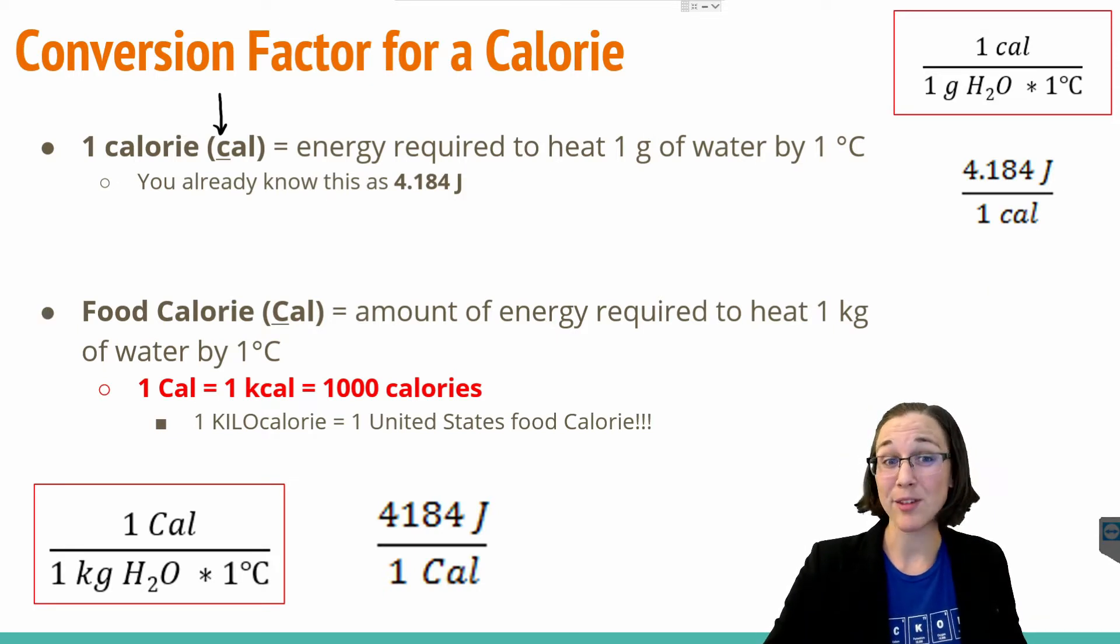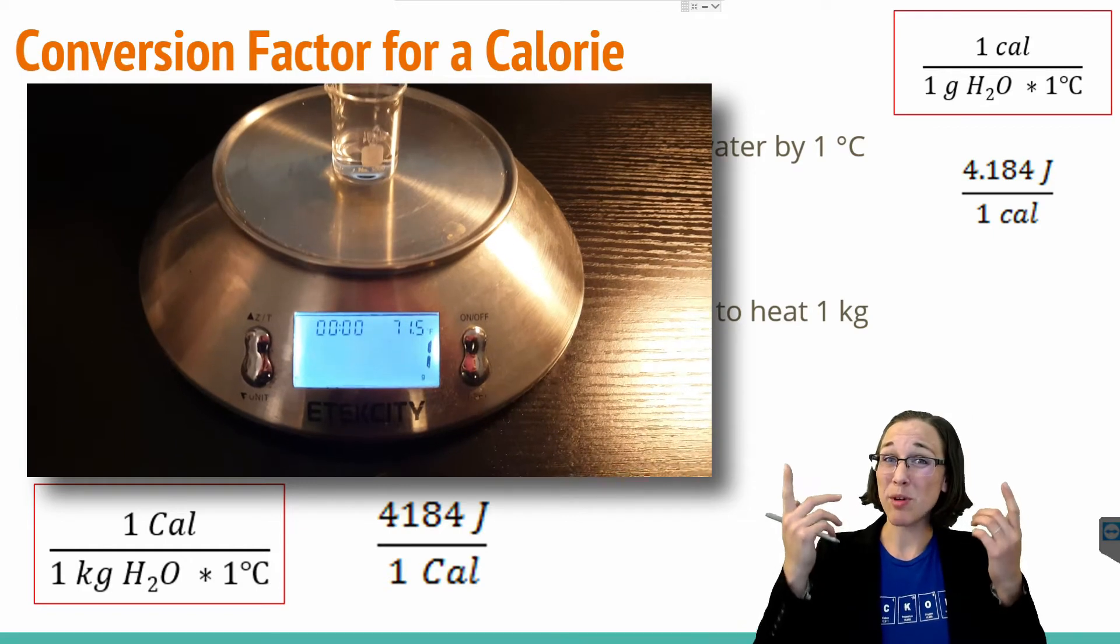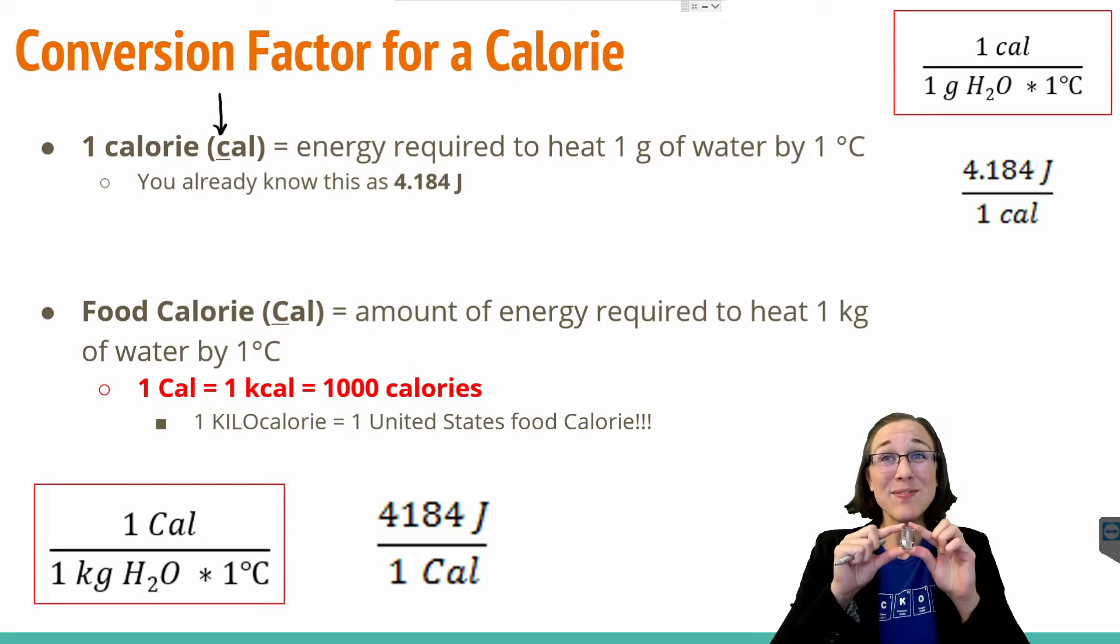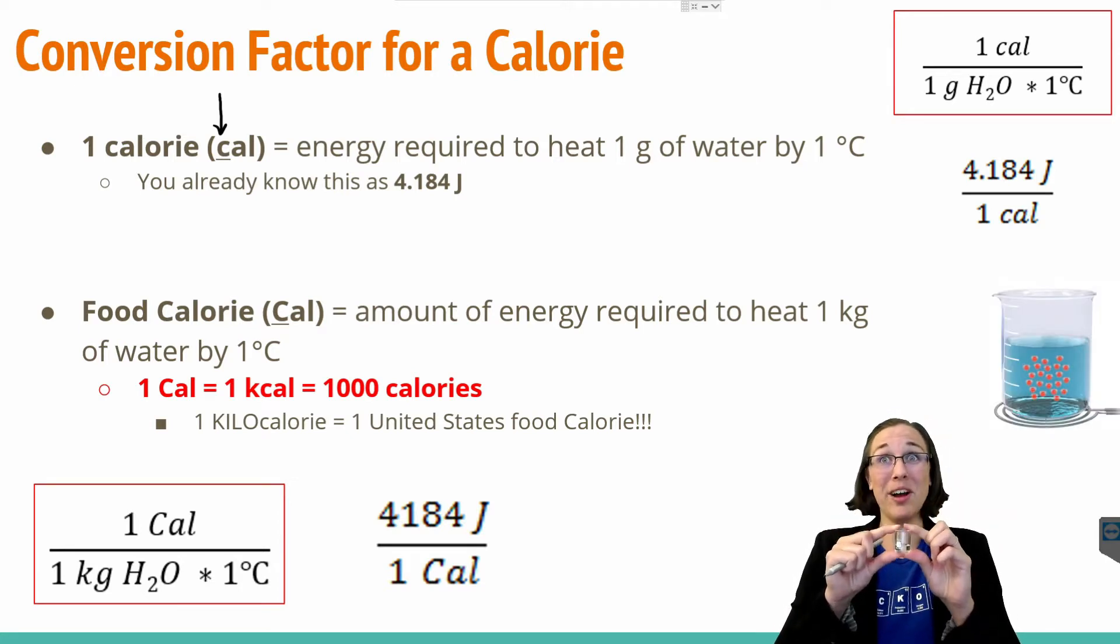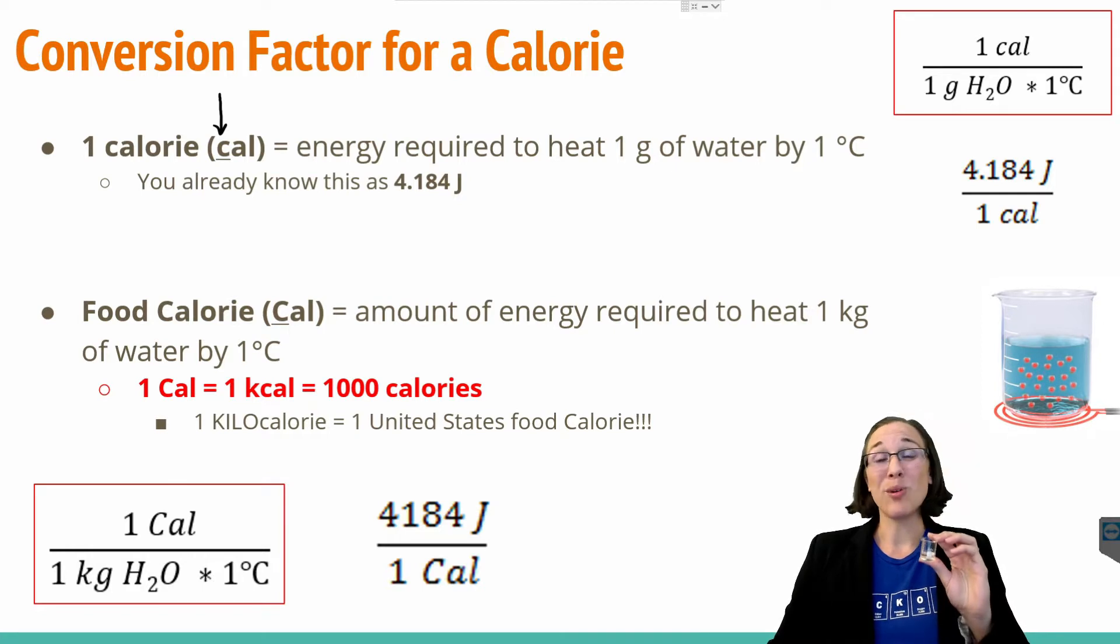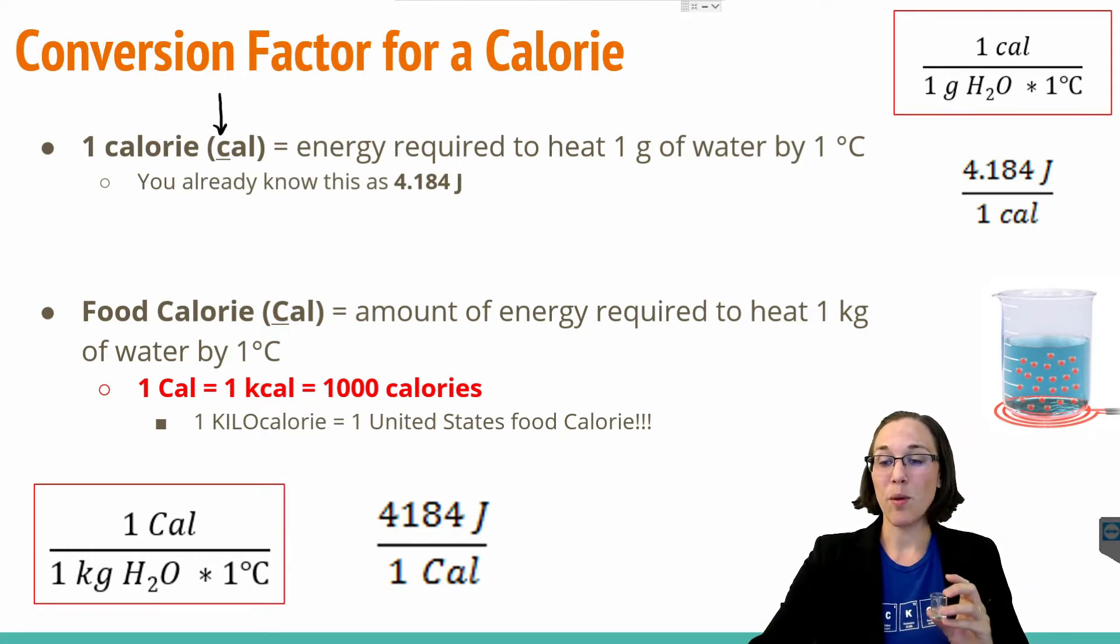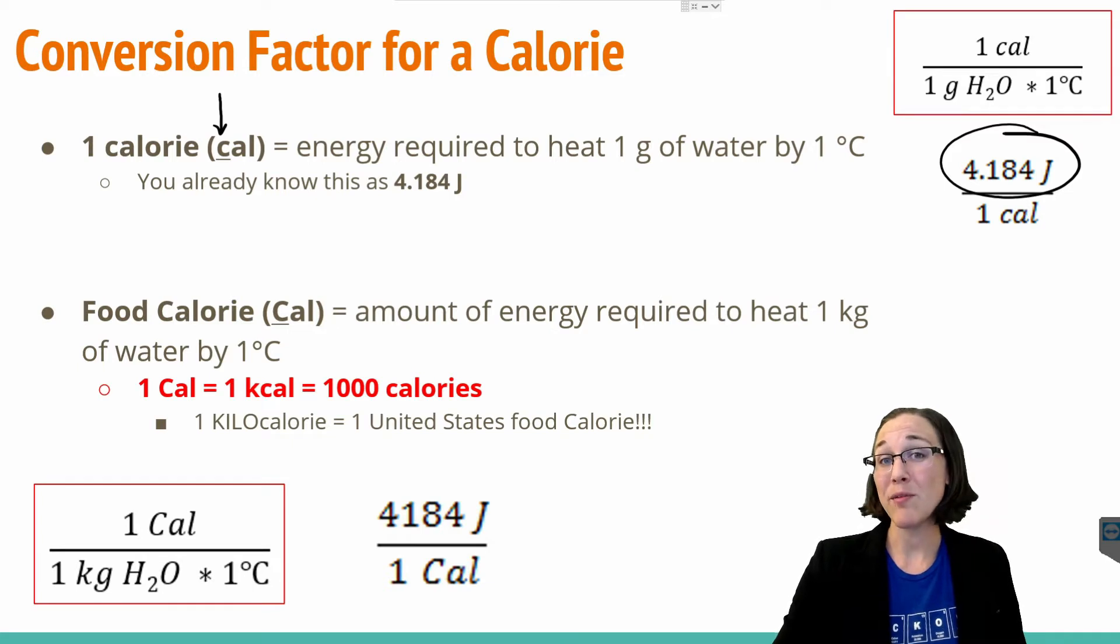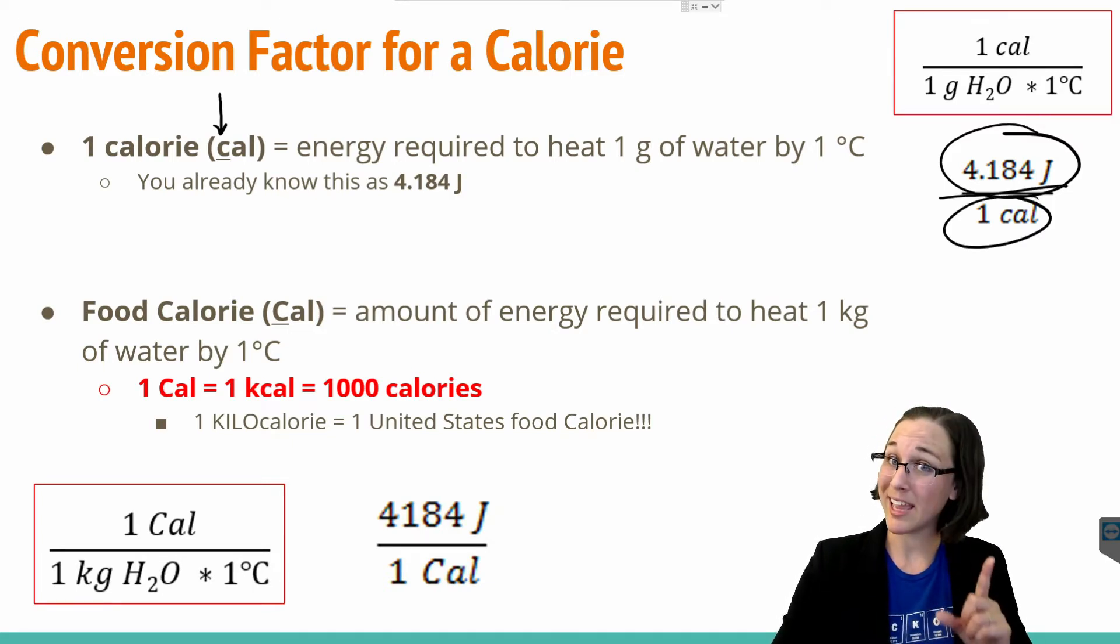Let's talk about the lowercase calorie first. It's the amount of energy required to heat one gram of water, which isn't a lot. So if you check it out, I'm weighing out one gram of water in a little tiny beaker. For size reference here, this is the beaker. It's very tiny. There's only a little bit of water in there. And if we were to heat this little tiny bit of water by one degree Celsius, that's equivalent to the energy of one lowercase calorie. We already know that as 4.184 joules from the specific heat of water and the energy of heating equation video linked in the description below. So 4.184 joules is equivalent to one lowercase calorie.